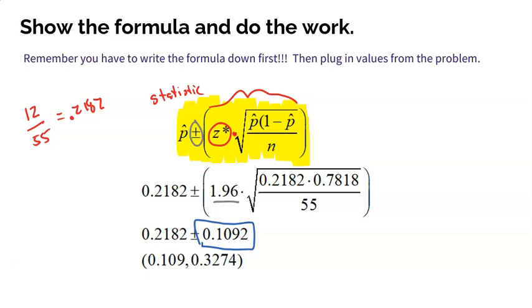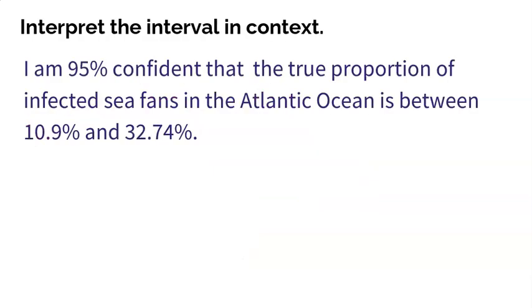Now I have to interpret that in context. Here, I'm simply starting off with my level of confidence. I'm 95% confident that the true population proportion of infected sea fans in the Atlantic Ocean is somewhere between that 10.9% and that 32.74%. So I got my interval based on a sample. My sample is just one of many. So just because my sample was about 21% doesn't mean that that's guaranteed to be true for the population. But if I allow my sample to be an estimate, go up and go down a little bit by that margin of error, I get this interval where I'm 95% confident that the true proportion of infected sea fans in the Atlantic Ocean will fall. Pretty easy.